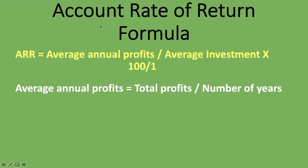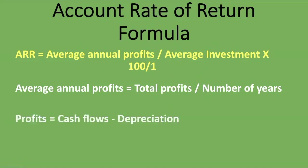But what if you're given cash flows instead of profits? If you're given cash flows, you take the total cash flows minus the total depreciation and you get your profits. Cash flows represent what you have without depreciation, because depreciation is a non-cash item. So to work backwards towards profit from cash flows, you simply take the cash flows you're given and deduct the depreciation — and that gives you your profits.